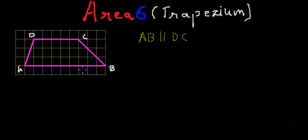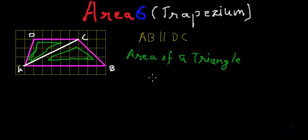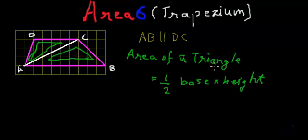Now the question arises: how to find the area of this trapezium? I have done a smart thing — I have divided that trapezium into two triangles. I have drawn the diagonal AC of the trapezium, which actually divides the trapezium into two triangles: triangle DCA and triangle ABC. We know the area of a triangle — area of a triangle is equal to one-half base multiplied by height, and we have derived this formula in earlier videos.